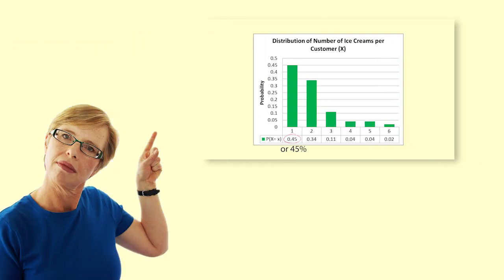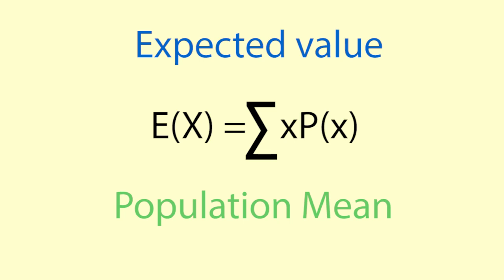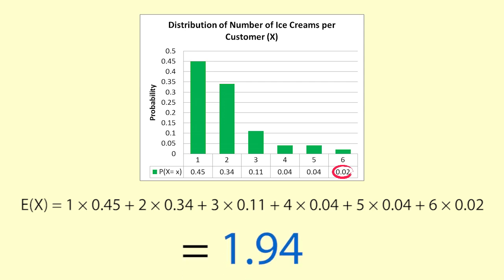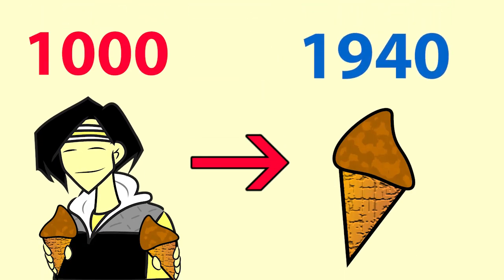In the previous video we answered some questions using this distribution. We can also find the expected value of x, which is also called the population mean. It gives a long run average value for all the x values in many repetitions. In our example it is the average number of ice creams per customer. We calculate the expected value by multiplying each value by its probability and adding the results together. So the expected value for x is 1 times 0.45 plus 2 times 0.34 plus 3 times 0.11 plus 4 times 0.04 plus 5 times 0.04 plus 6 times 0.02. This equals 1.94. In the long run we would expect the number of ice creams sold to be around 1.94 times the number of customers.